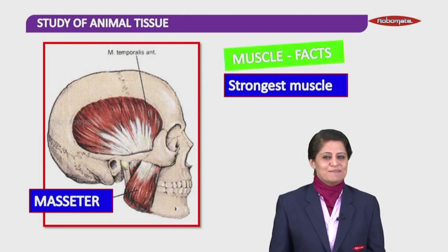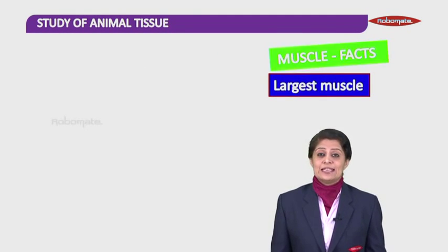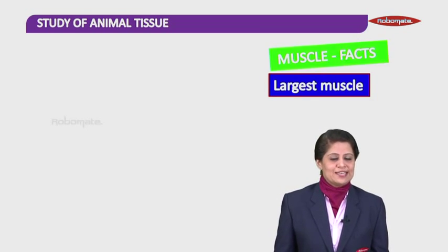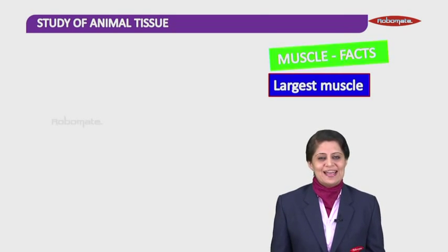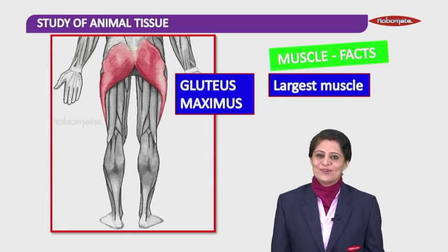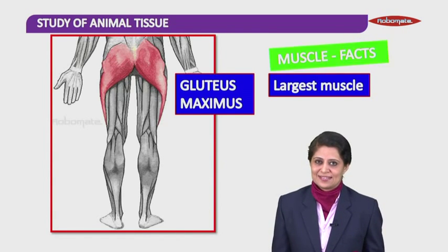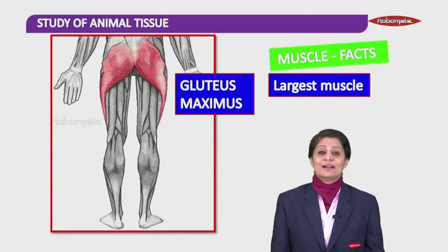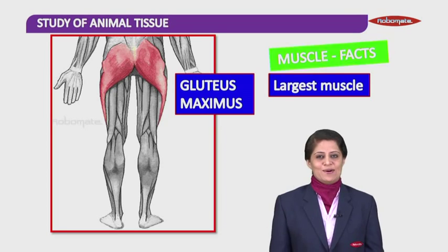Which muscle in your body is the largest muscle? If you are sitting right now, you are sitting on that muscle. It's known as gluteus maximus. This is the muscle which is present in your bottom. Gluteus maximus is the largest muscle of your body.